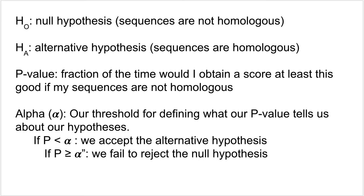If your alpha was 0.05 and you obtained a p-value of 0.1, then you would fail to reject the null hypothesis in favor of the alternative hypothesis. That means you have not gathered enough evidence to say that your sequences are homologous. An important point: a high p-value does not mean you are accepting the null hypothesis — it just means you do not have enough evidence to show that the sequences are homologous.